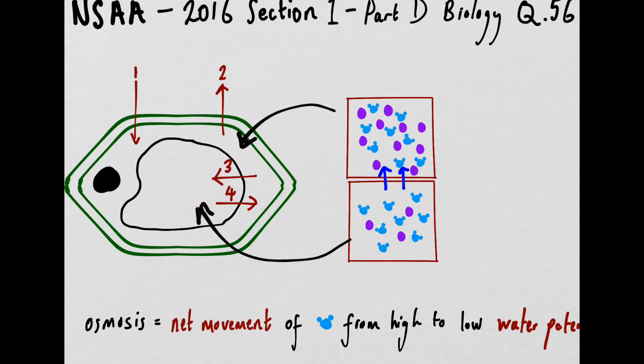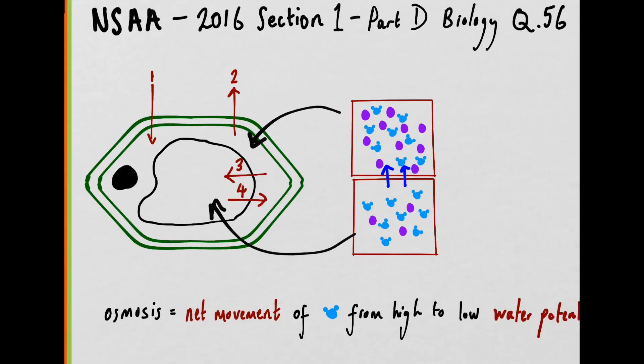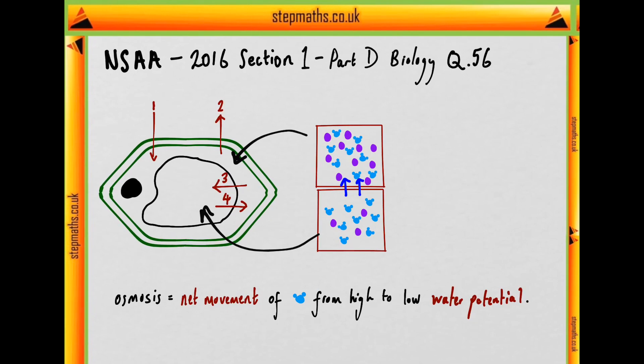So four indicates this movement and two indicates the movement described earlier. So we can say our answer is that arrows two and four represent the movement of water. Our answer is therefore F.